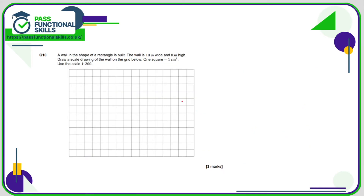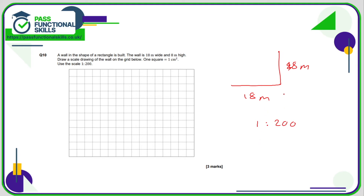Question ten: a rectangular wall is 8 meters high and 18 meters wide. Each grid square is 1 centimeter by 1 centimeter, and the scale is 1 to 200. Converting to centimeters: 8 meters is 800 centimeters and 18 meters is 1800 centimeters.